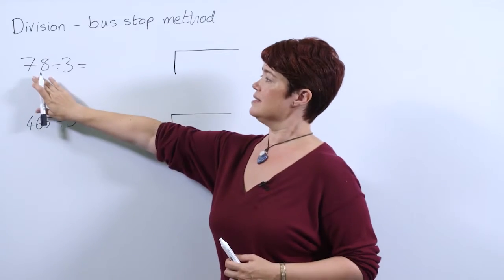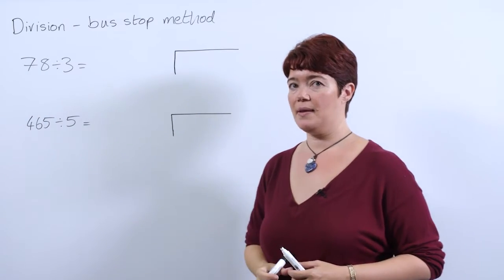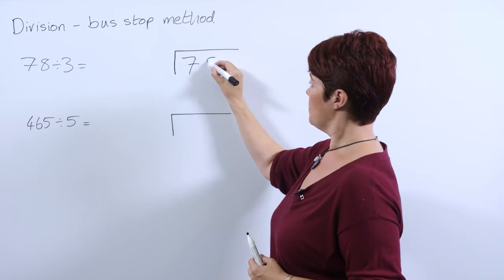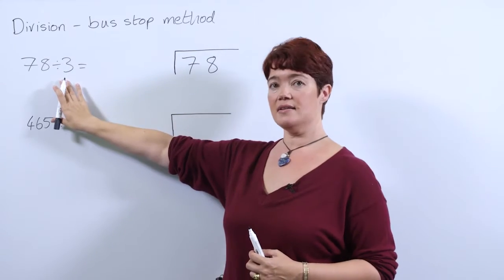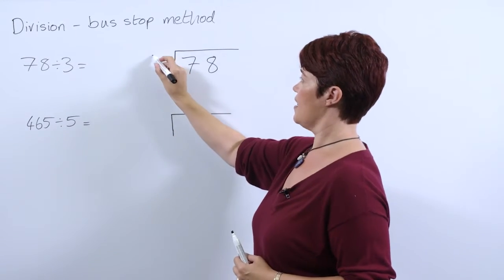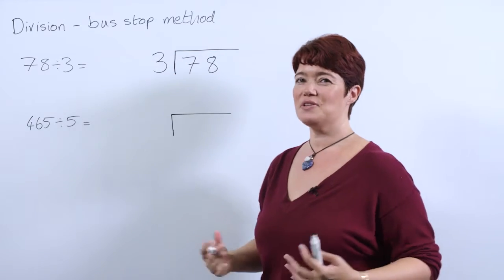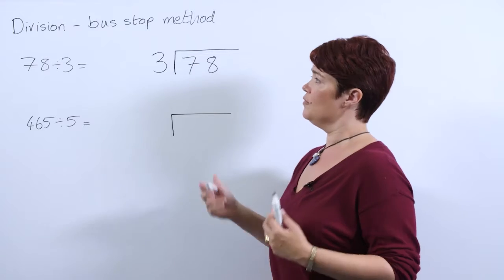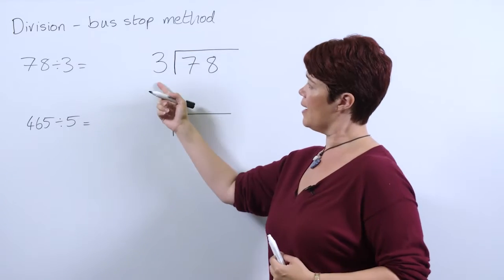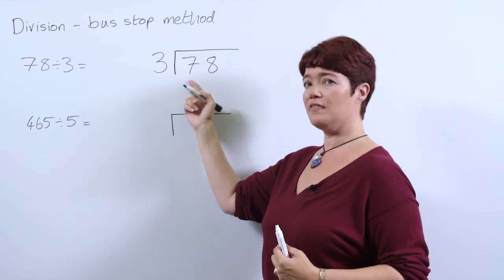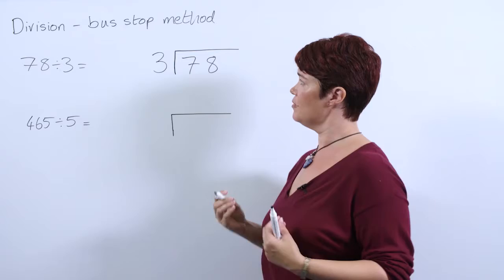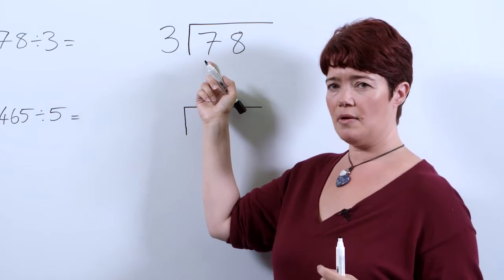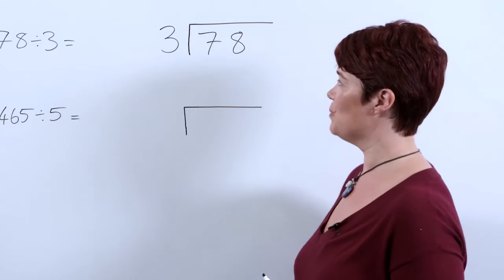Let's look at our problem: 78 divided by 3. Now our dividend, the number we're dividing, goes inside our bus stop. Our divisor, the number we're dividing by, goes outside our bus stop. As we've mentioned previously, it's quite helpful to remind pupils that we're starting at the front of the queue, so how many threes can we have in seven? Remember that isn't really a 7, it's a 70, but it can help pupils if we think of it as a 7 at the moment.